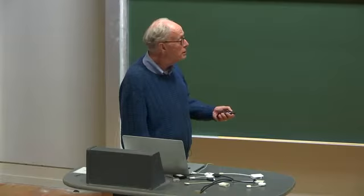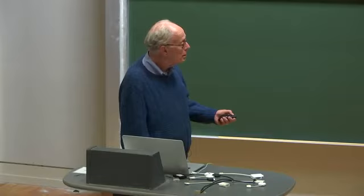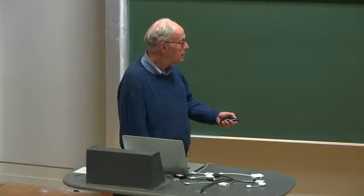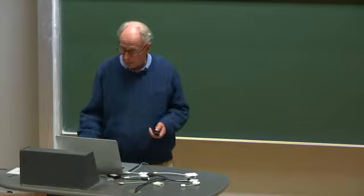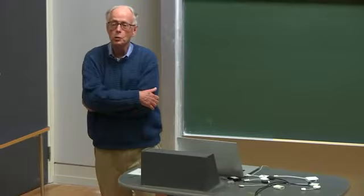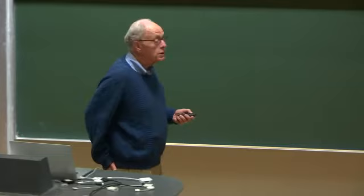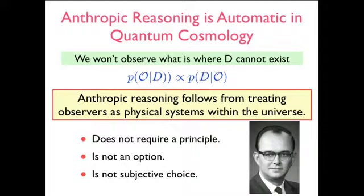These are called first-person probabilities, these conditional probabilities. And our objective to test the theory, test the third-person theory by its first-person predictions, and H and Psi supply some probabilistic measure on that. That means anthropic reasoning, which has been alluded to in various tones here at this conference, is automatic in quantum cosmology if you seek to predict probabilities for observations.